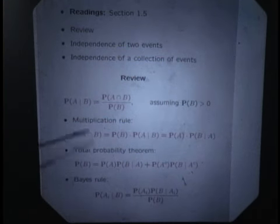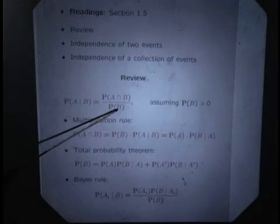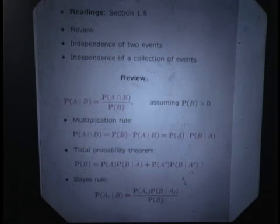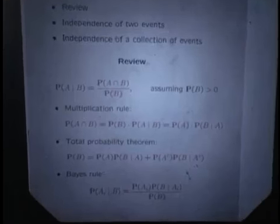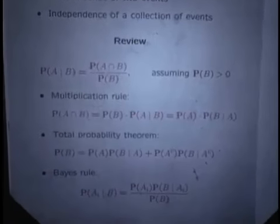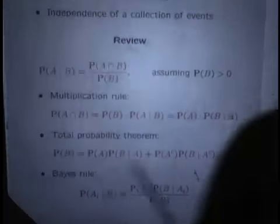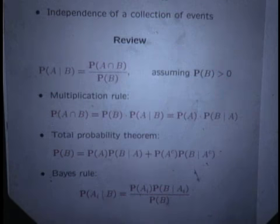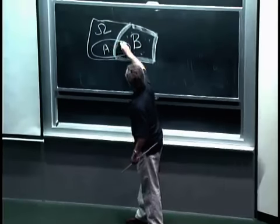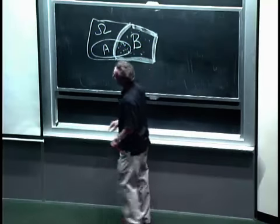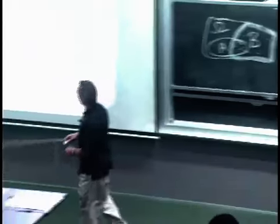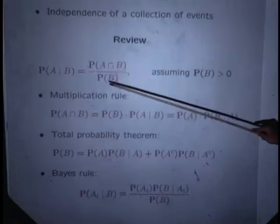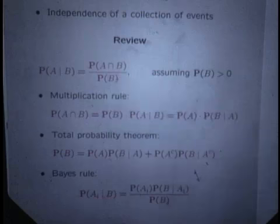Out of the total probability that was initially assigned to the event B, what fraction of that probability is assigned to outcomes that also make A happen? So out of the total probability assigned to B, we see what fraction of that total probability is assigned to those elements here that will also make A happen. Conditional probabilities are left undefined if the denominator here is zero.